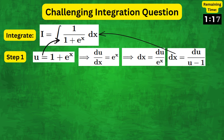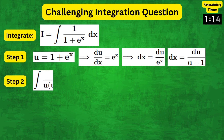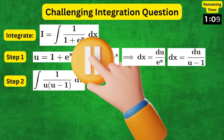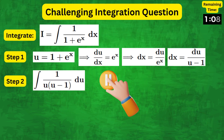Plugging these into the original integral, we get 1 over u times (u minus 1) du. I would encourage you to pause the video and think about what the next steps might be.